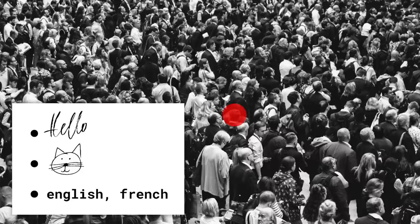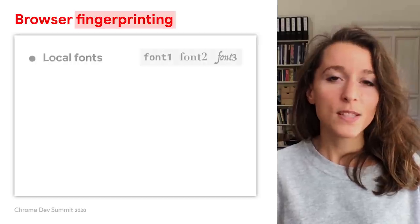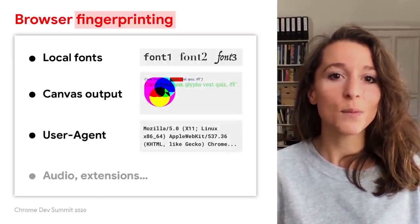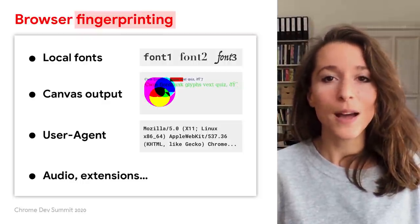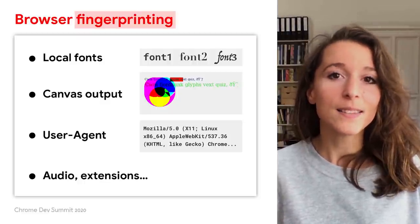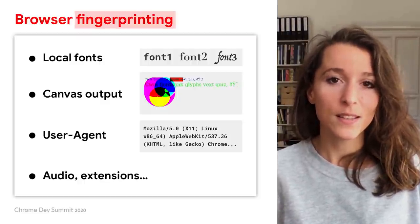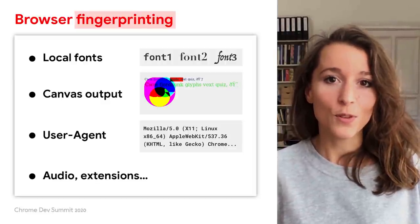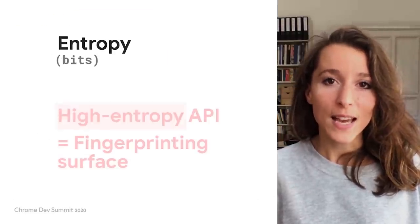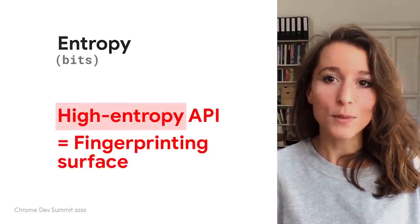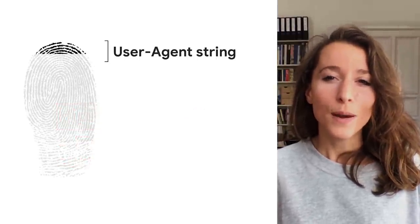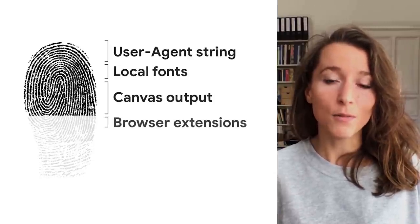Browser fingerprinting works in the same way. The fonts you've installed locally, the way your browser renders canvas elements, your browser user agent string, and more, are bits of information that remain somehow stable over time for one user but vary a lot across different users. And they're easy for sites to access. You can actually quantify how much identity a piece of information exposes in bits, with a measure called entropy. If an API is high entropy — so highly identifying — it can be used for browser fingerprinting, so it's called a fingerprinting surface. When you combine several high entropy surfaces, they may uniquely identify you.